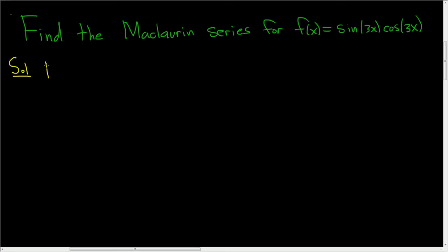So recall a familiar trigonometric identity. If you have the sine of 2x, that's equal to 2 sine x cosine x.